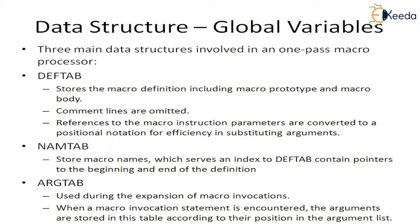The data structure is a global data. There are three main data structures involved in the one pass microprocessor. Basically, the one pass microprocessor contains the DEF table, the NAM table, and the ARG table.